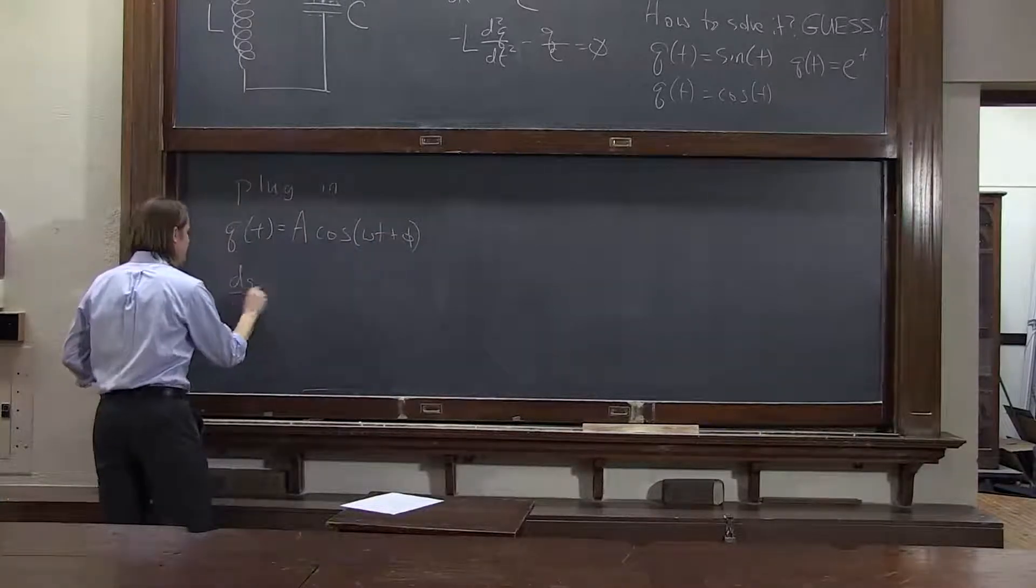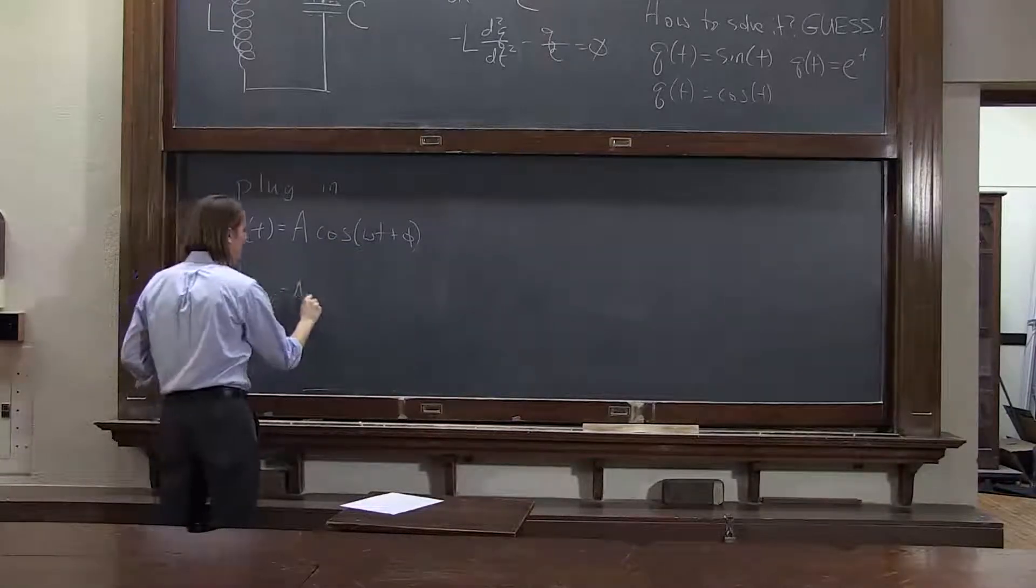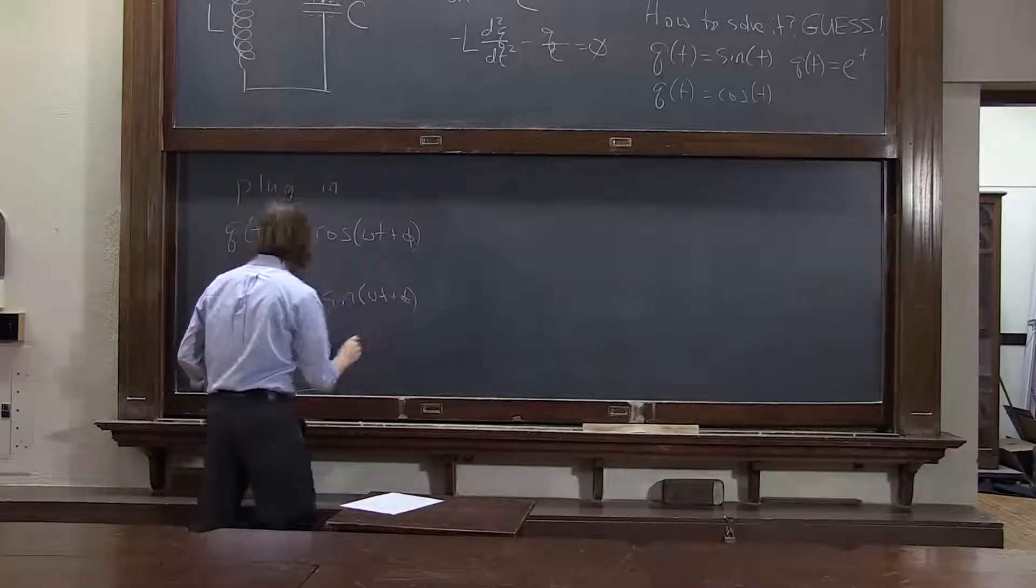Therefore, dq/dt equals A. Derivative of cosine is negative sine. Pull out an omega: minus A omega sine omega t plus phi.